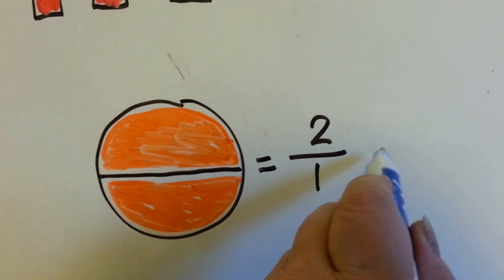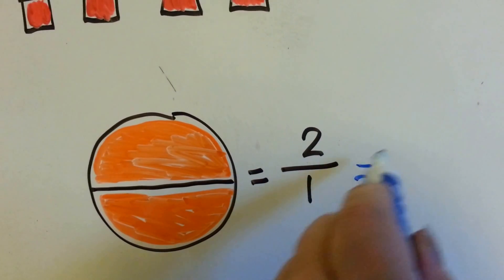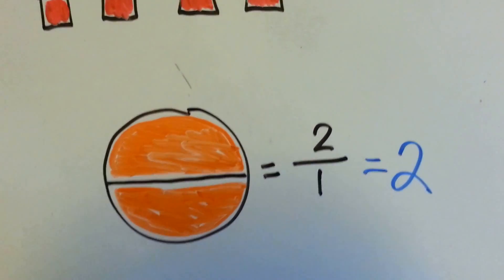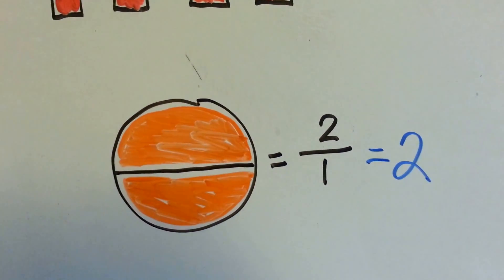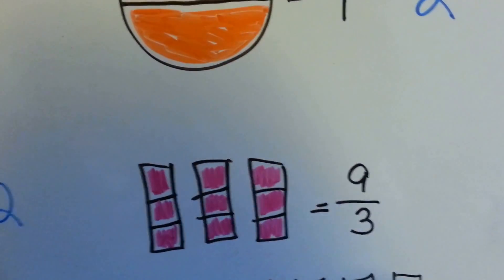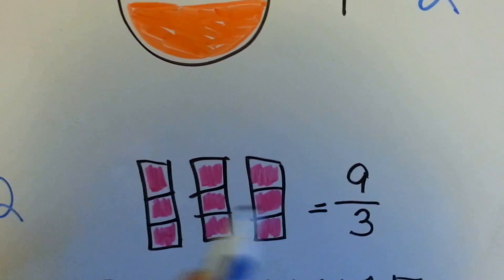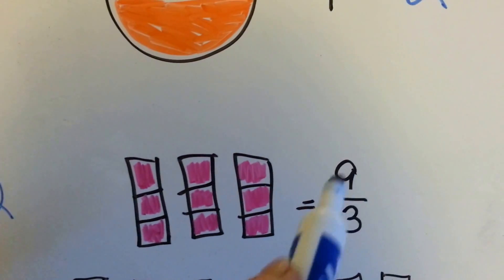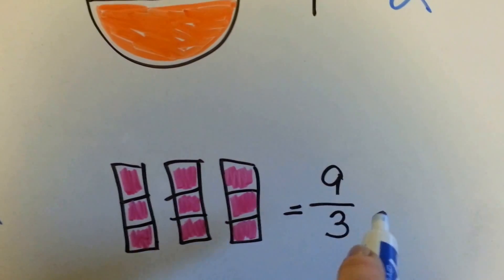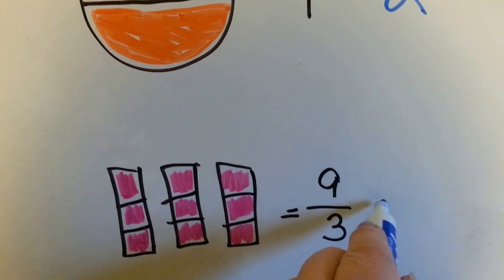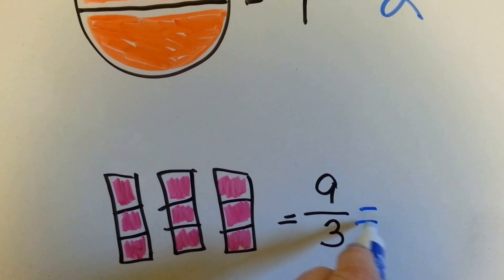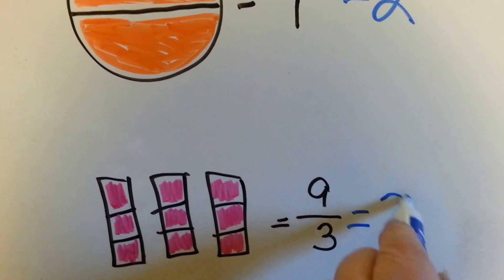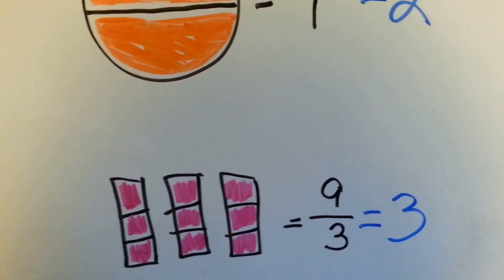How many times can one go into two? Two times. Look at it as a division problem. Nine divided by three — how many threes are in nine? Three.